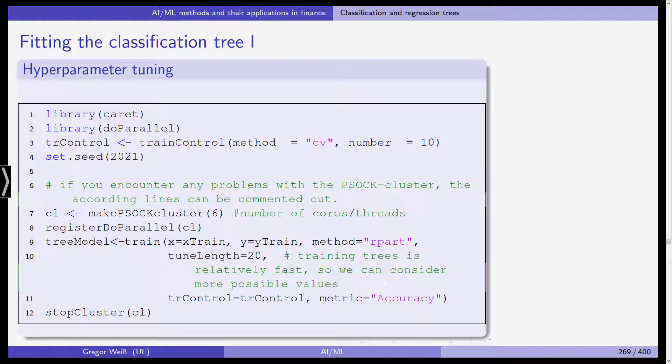We fit the classification tree. As is common in many of our machine learning algorithms, we need to select the hyperparameter, which is the parameter that governs the training, the learning process. We use the caret library and we do this in parallel. We use cross-validation. Train control is the function in caret to select the method for hyperparameter training. What we do here is tenfold cross-validation.